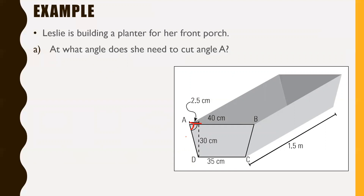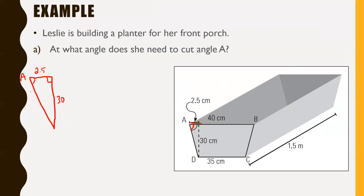Taking this skinny triangle and bringing it out a little bit bigger: we can say there's a right angle here, angle A is the angle we're looking for, the top side is 2.5 centimeters, and this long side is 30 centimeters. We already know a couple of the side lengths, so we have to use a little bit of trigonometry to find this.